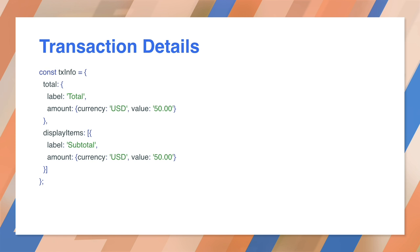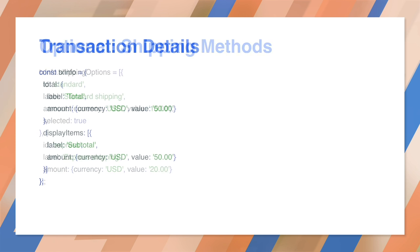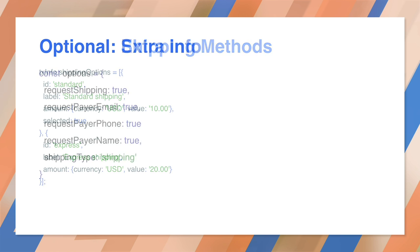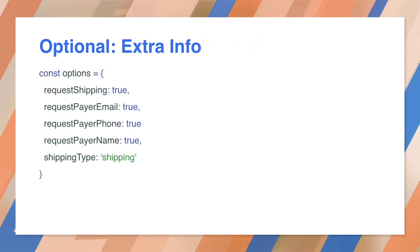Keep the line items fairly high level — it isn't meant to be used as an itemized receipt. If you want more than one shipping option, you can define this structure. Notice it's a property on the transaction details. If you have multiple options, include a selected bit. The browser will highlight the selected option and fire an event when it changes. Now you can define what information you want from the API. By default, payment request will only return the payment info. If the user is logged in, you may have the rest of their information. If you need more, these options let you collect what you need.